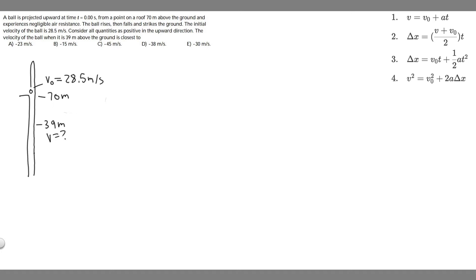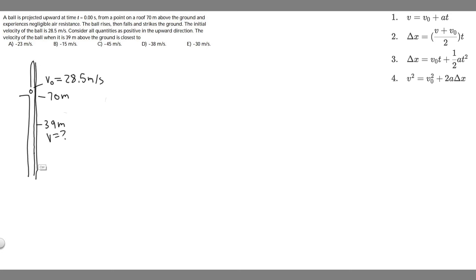So the first thing you always want to do is draw what's going on. So we have this ball — keep in mind it's 70 meters above the ground — and we know it's going to be launched at a speed of 28.5 meters per second. So it's going to go up, rise, and when it hits the top it's going to fall down and hit the ground. So what we're trying to do here is find the velocity at the 39 meter point — 39 meters above the ground — that's what we want to find.